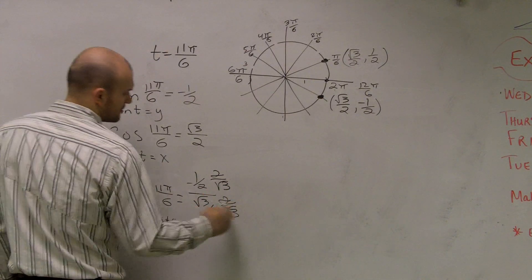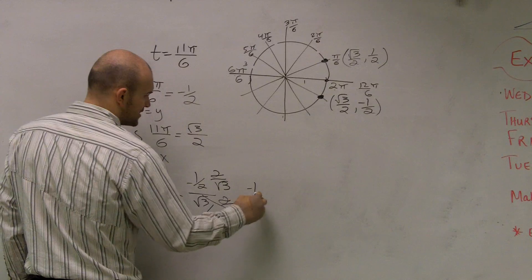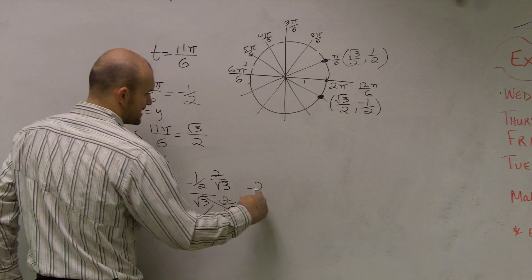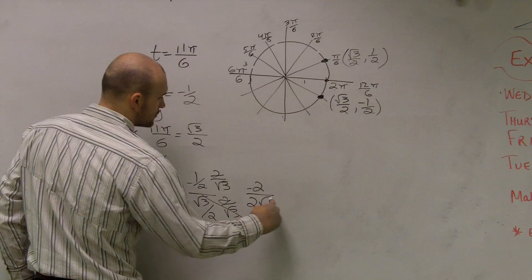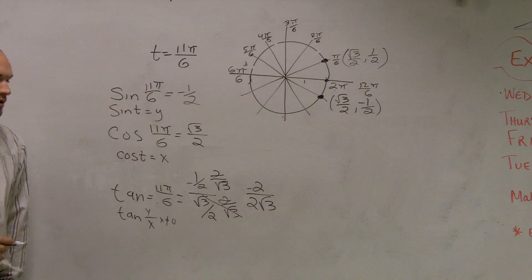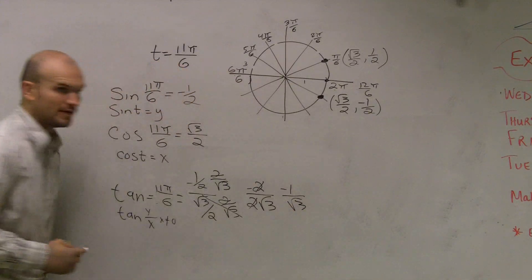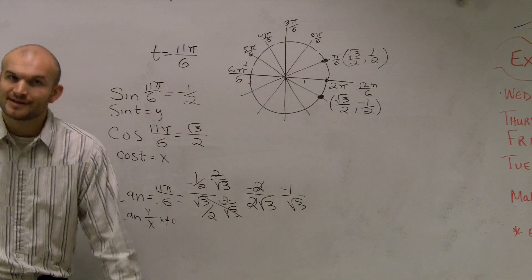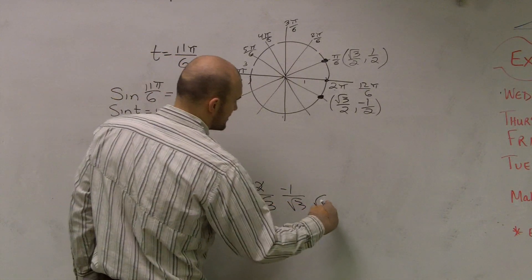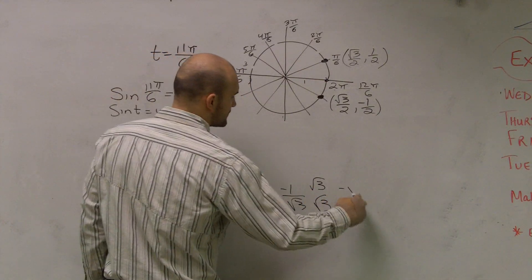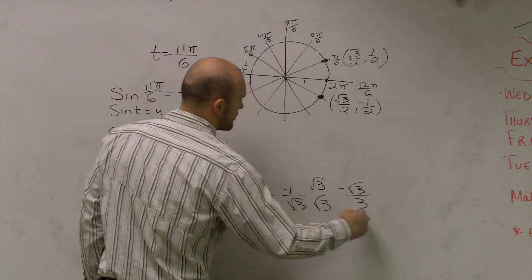That cancels to 1. So I'm just left with a negative. Negative 1 times 2 is negative 2 over 2 radical 3. These two will cancel out, so I'm left with negative 1 over radical 3. Again, you can't have a radical on the bottom. So rationalize the denominator by multiplying by square root of 3 over 3. Therefore, I'm left with negative radical 3 over 3.